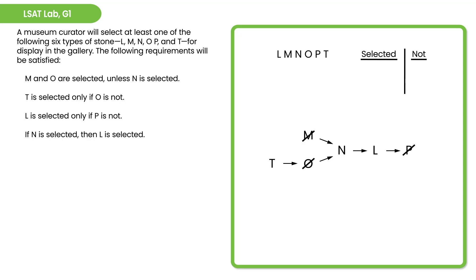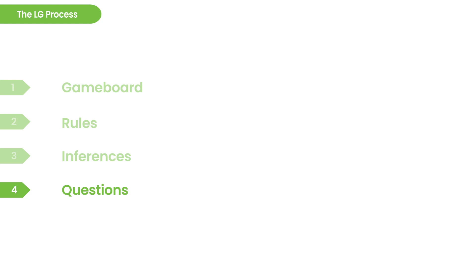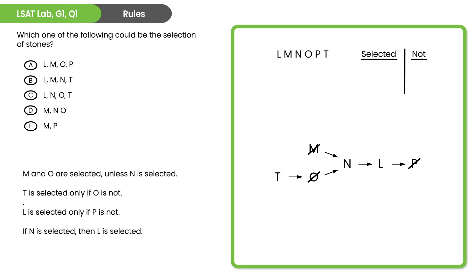Now that we've connected the rules together, let's take a look at the questions. We'll let you try these questions one at a time — pause the recording, see if you can find an answer that you like, and then when you're ready to check your work, hit play again and compare notes. This first question is a rules question — it's asking for an acceptable selection of stones, one that satisfies all of the rules. The best approach is to take the rules and apply them one at a time to knock out wrong answer choices.